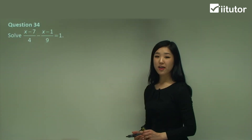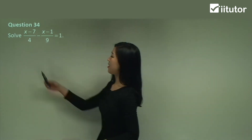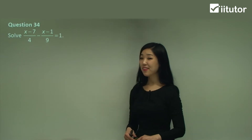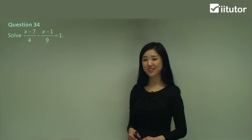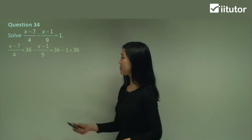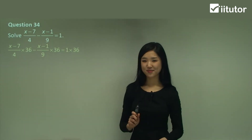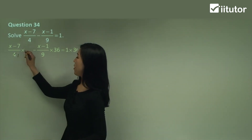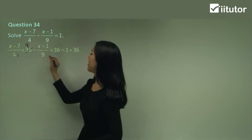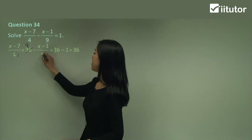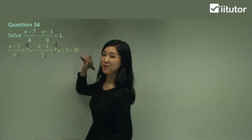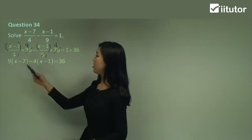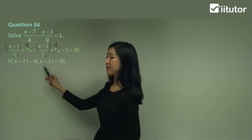Question 34. What are the denominators? It's 4 and 9. So what's the lowest common multiple? I think it's going to be 36 — hopefully most of you can identify that as well. So multiply everything by 36. What's 36 divided by 4? That's going to be 9. And 36 divided by 9 — that will be 4. So it's going to be 9 times (x − 7) minus 4 times (x − 1).